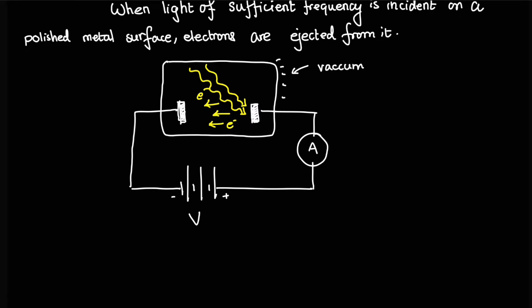Our ammeter will measure the electric current, the amount of electric current flowing in between these two points. One question might be, why are we actually using vacuum? This is because we do not want any of the electrons that are being kicked off from this polished metal surface to interact or bump with any gases in between these two metal surfaces. That is why it's very important to use vacuum.